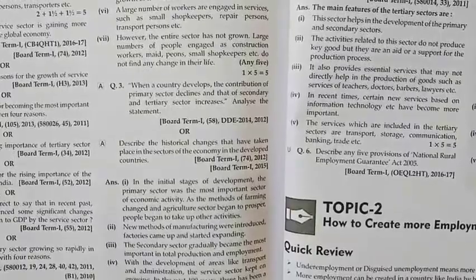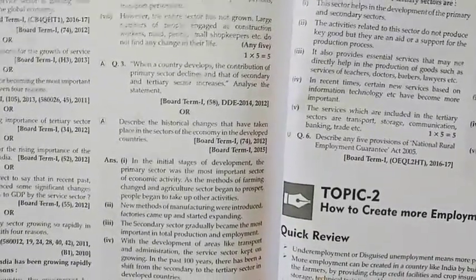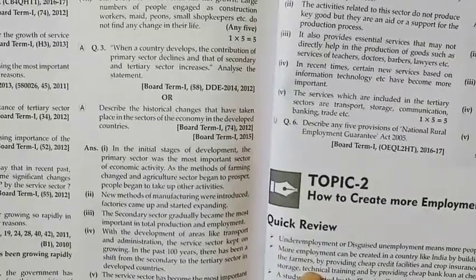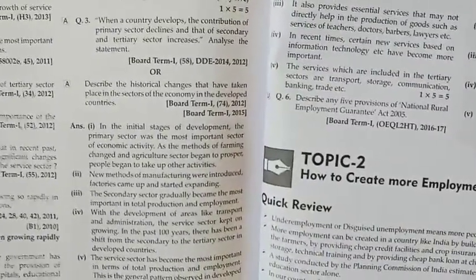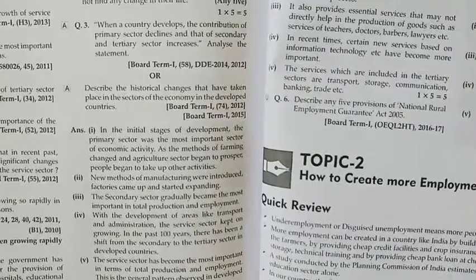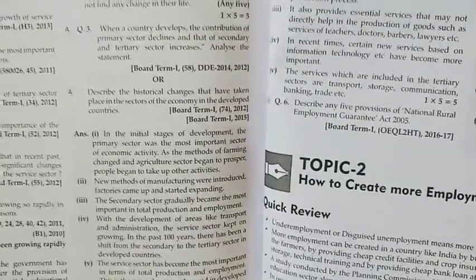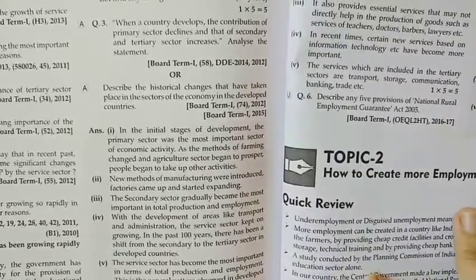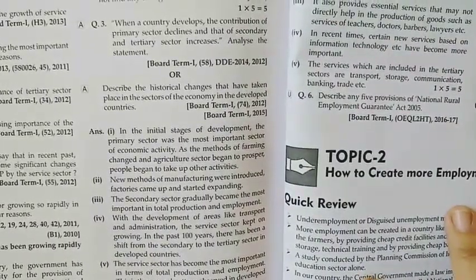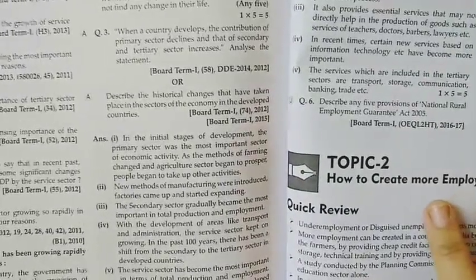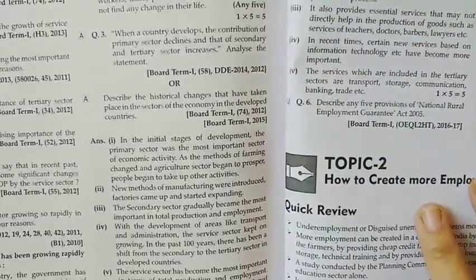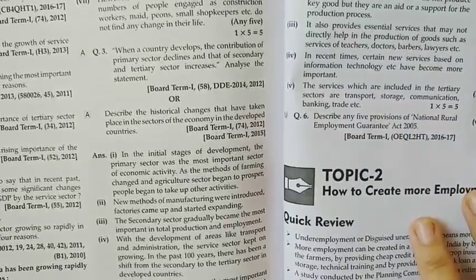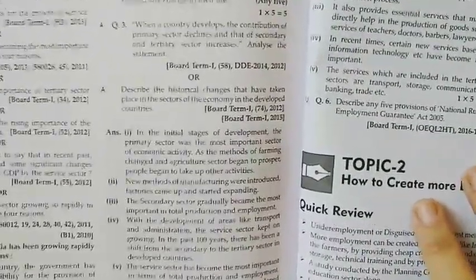Then: when a country develops, the contribution of the primary sector declines and that of the secondary and tertiary sectors increases — analyze the statement and describe the historical changes that have taken place in sectors of the economy in developed countries. This question is also marked in your textbook. We have seen these historical changes: first, the most importance was given to the primary sector, agriculture was growing. Then as LPG — liberalization, privatization, globalization — happened, people started shifting to the secondary sector, more industries were created, and people got job opportunities and income. Now, as demand for services increases, the service sector is increasing. That historical changes answer you have to write here.